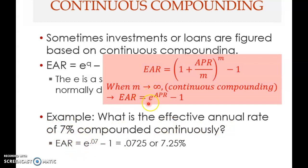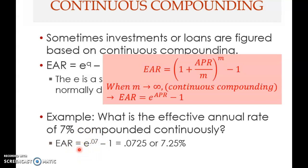e^0.07 − 1 gives approximately 7.25%. The value of e is 2.71828..., or roughly 2.7183 to four decimal places — the natural log base you may have learned in school. We raise 2.7183 to the power of 0.07 and subtract 1 to get 7.25%.